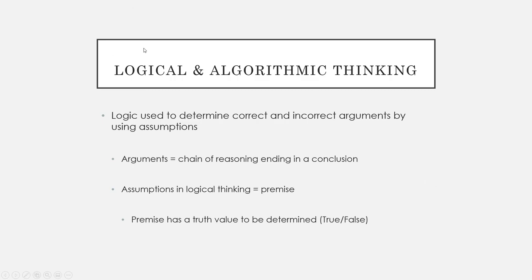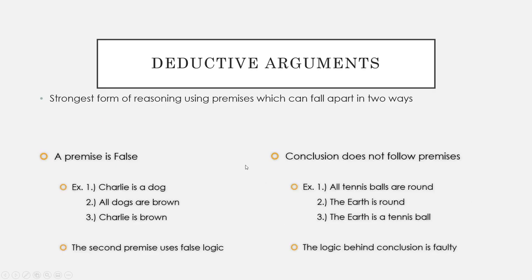Let's break down some of these core concepts, starting with logical and algorithmic thinking. Logical thinking is using logic to determine correct or incorrect arguments by using some kind of assumption. An argument is a chain of reasoning that ends in some kind of conclusion. An assumption in logical thinking is the premise of our argument — our premise has some kind of truth value that will either be true or false, like 'the sky is blue.'